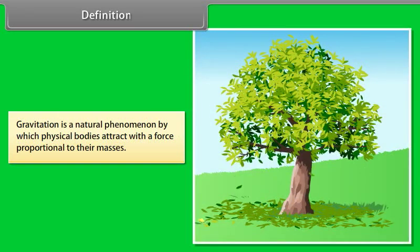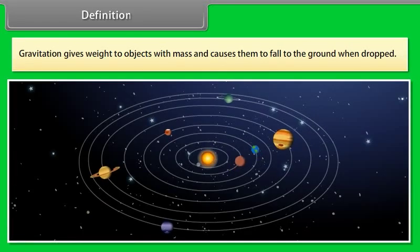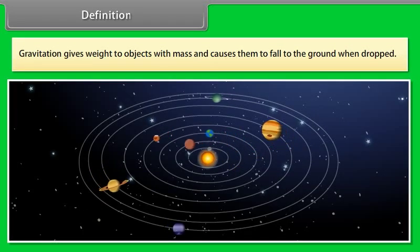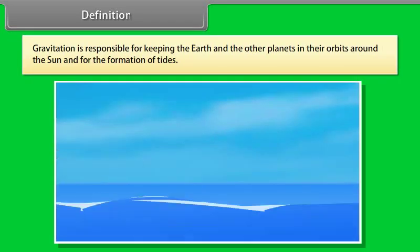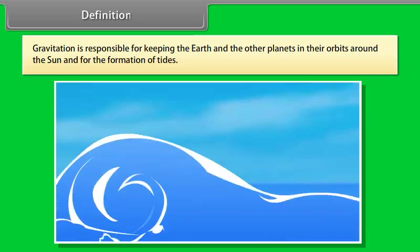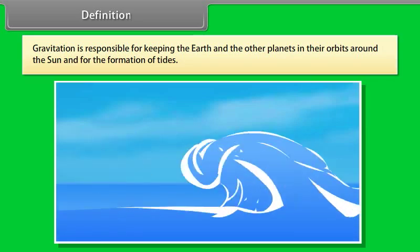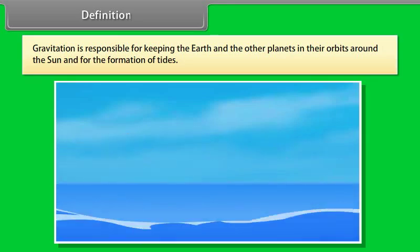Definition. Gravitation is a natural phenomenon by which physical bodies attract with a force proportional to their masses. Gravitation is most familiar as the agent that gives weight to objects with mass and causes them to fall to the ground when dropped. Gravitation is responsible for keeping the earth and the other planets in their orbit around the sun and for the formation of tides.